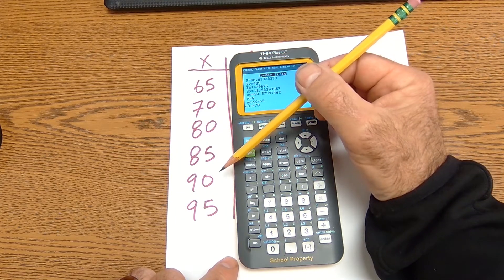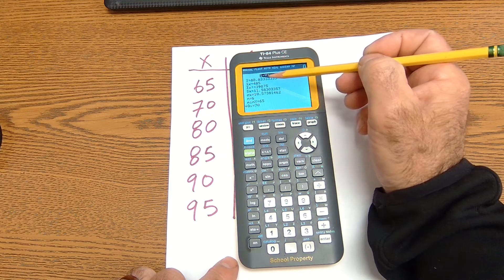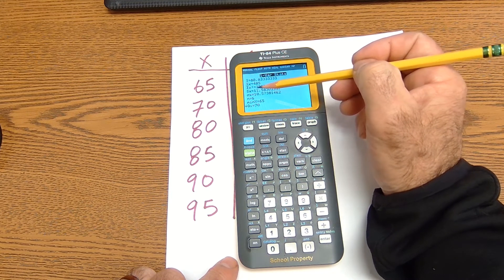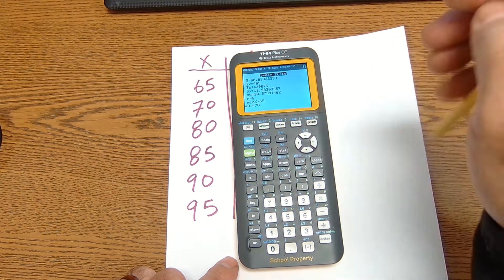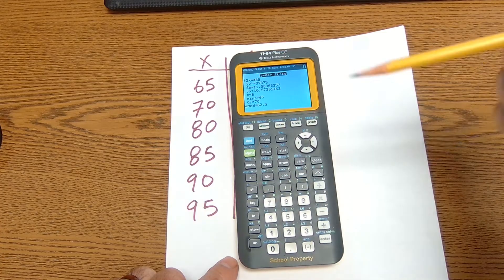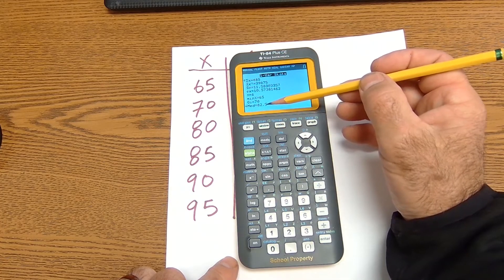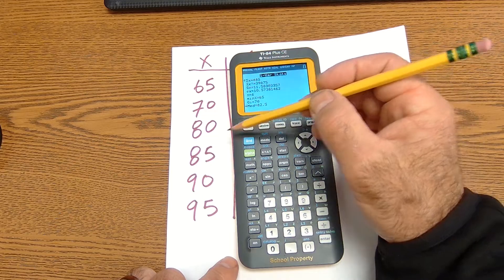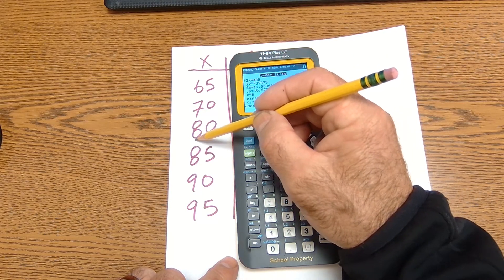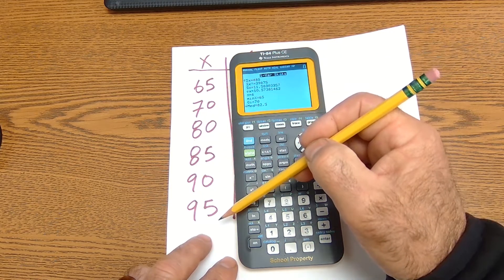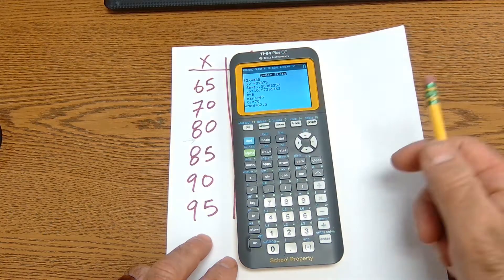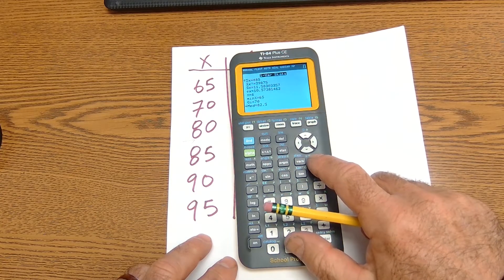The average test score for these six scores is 80.83 with a standard deviation at 10.57. I could scroll down a little bit further. See that the median is 82.5. That's going to be the middle value right in there because I have an even number of values, it's the average of the two middle ones.